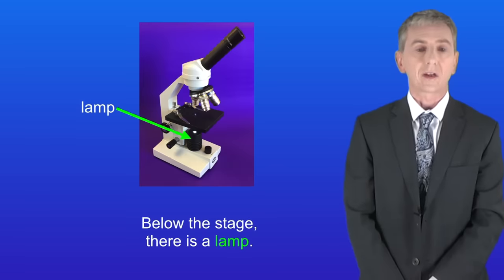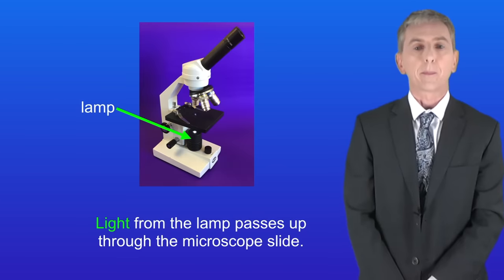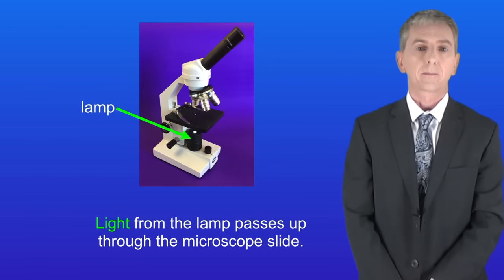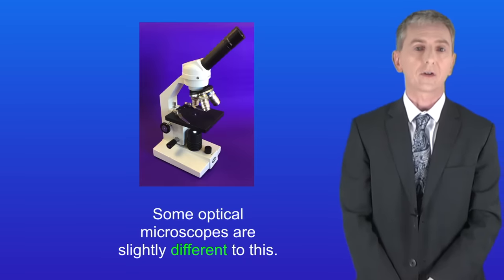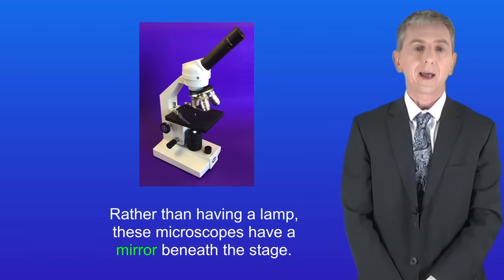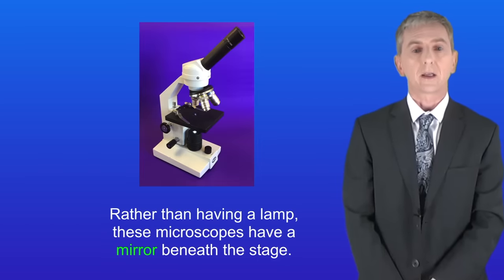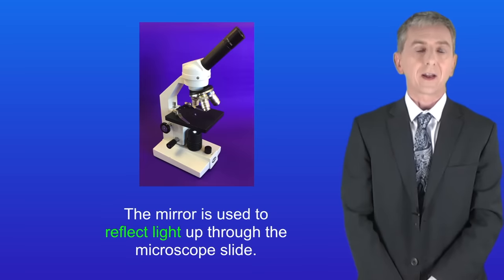Below the stage there's a lamp. Light from the lamp passes up through the microscope slide. Now as I said before, some optical microscopes are slightly different. Rather than having a lamp, these microscopes have a mirror beneath the stage. The mirror is used to reflect light up through the microscope slide.